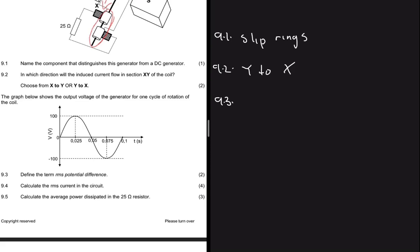We know fully well that's the AC potential difference which dissipates the same amount of energy as an equivalent DC potential difference.